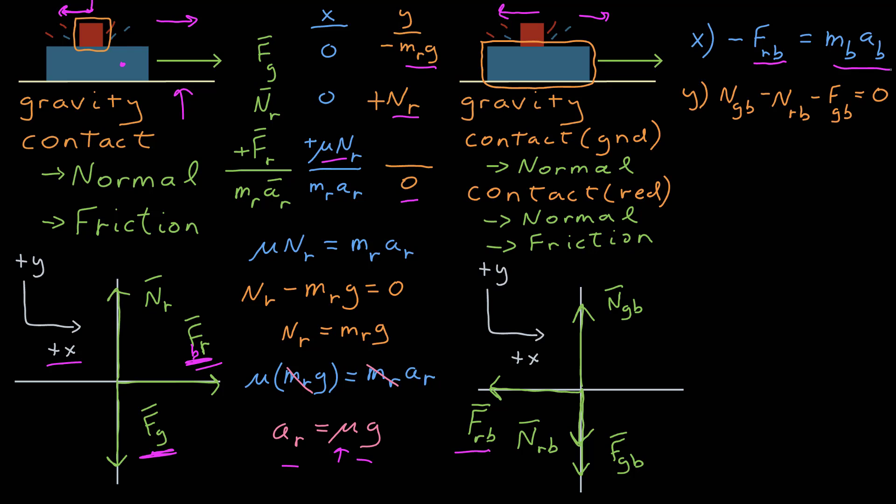Along the y, I have the normal force of the ground on blue in the positive y direction, then the normal force of red on blue and the gravitational force on blue both pointing in the negative y direction, and the sum of all of it is equal to zero.